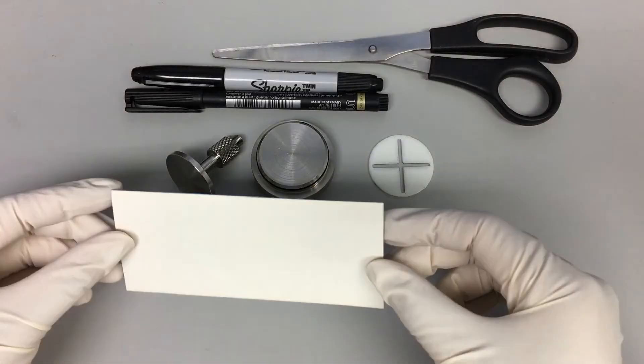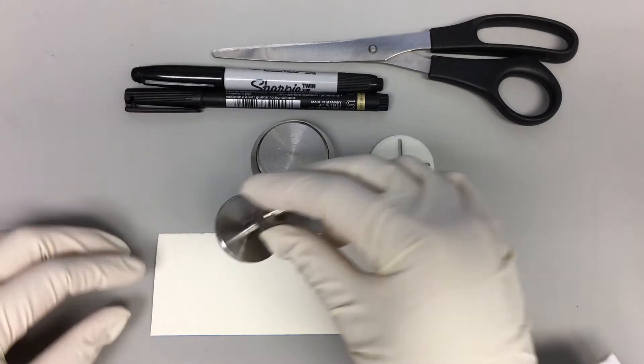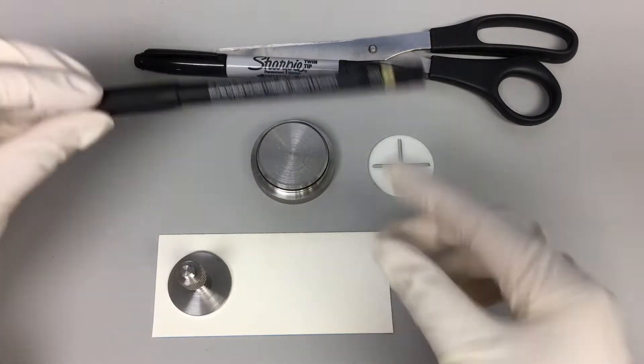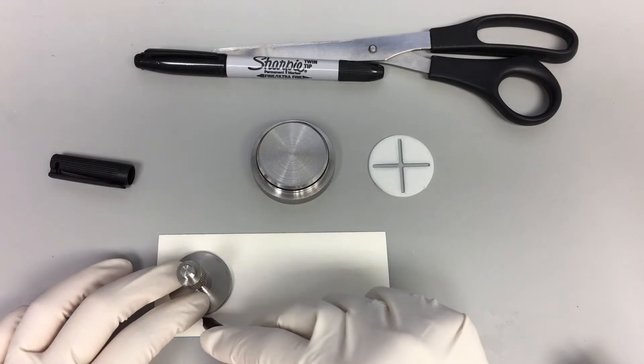Place the sandpaper on a flat surface with the back side facing upwards, position the flat indenter on this side and trace its contour using a permanent marker.